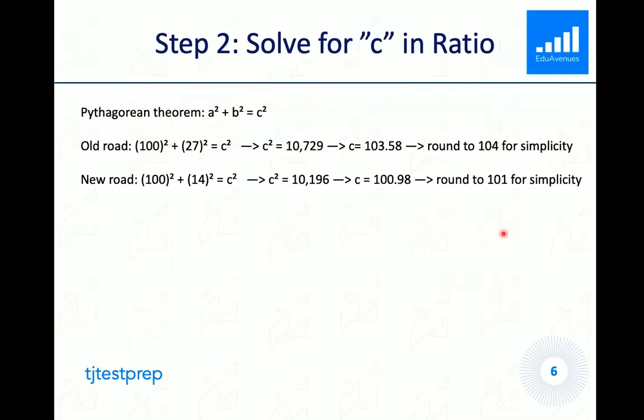The next step is to solve for the c value using the Pythagorean theorem. From the old road, we know that we can do 100 squared plus 27 squared is equal to c squared. And then we can solve this equation and get that c squared is equal to 10,729. After finding the square root of 10,729, which is 103.58, we can round it up to 104 for simplicity.